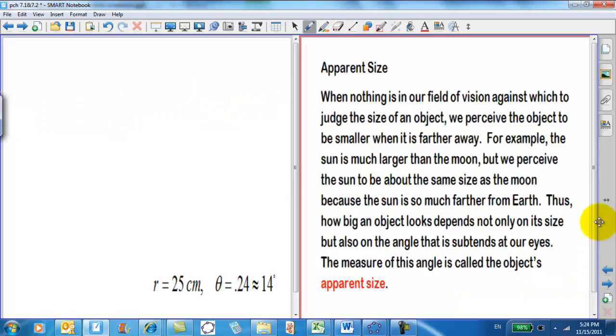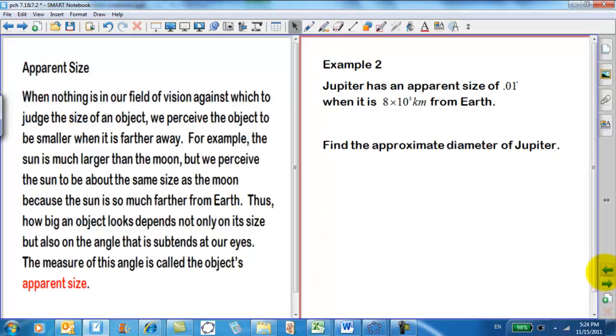Lastly, I want to look at apparent size. When there's nothing in our field of vision against which to judge the size of an object, we perceive the object to be smaller when it is farther away. For example, the sun is much larger than the moon, but we perceive the sun to be about the same size as the moon, because the sun is so much farther from the earth. Thus, how big an object looks depends not only on its size, but also on the angle that it subtends on our eyes. The measure of this angle is called the object's apparent size. Example two: Jupiter has an apparent size of 0.01 degrees when it is 8 times 10 to the 8th kilometers from the earth. Find the approximate diameter of Jupiter.